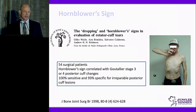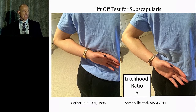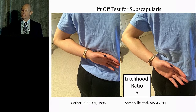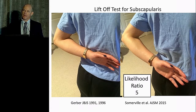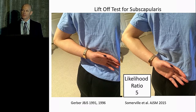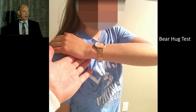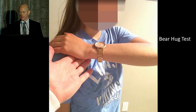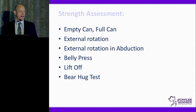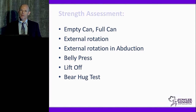The liftoff test in our study showed a likelihood ratio of five — very high — meaning a positive liftoff test strongly predicts a subscapularis tear. The problem is subtle subscapularis pathology may not be picked up because patients with stiffness and pain don't like placing their hand behind their back. For that reason I often rely more on the belly press test, in a more comfortable range. The bear hug test isolates the subscapularis in maximum internal rotation. In summary: empty can, full can, external rotation at adduction and abduction, belly press, liftoff, and bear hug should all be included in your cuff assessment.